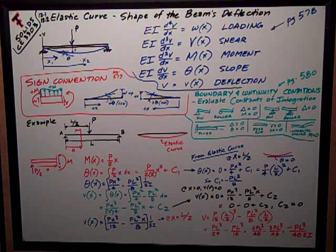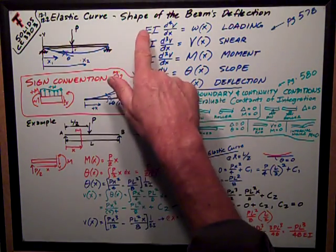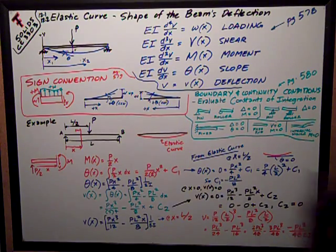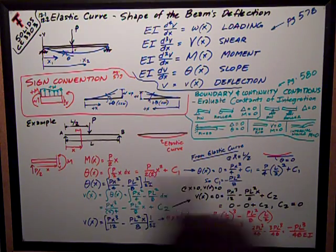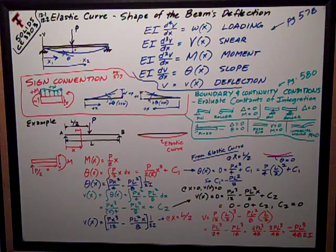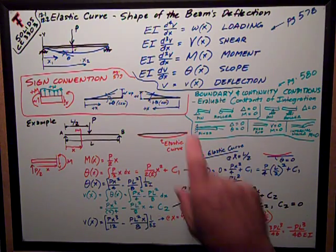Now, section 12.1 was spent in the book developing the relationship of the elastic curve. The elastic curve is the shape of the beam's deflection measured at the longitudinal axis along the centroid, the line of the centroid. And so it was a very elegant derivation of the relationships that exist here.